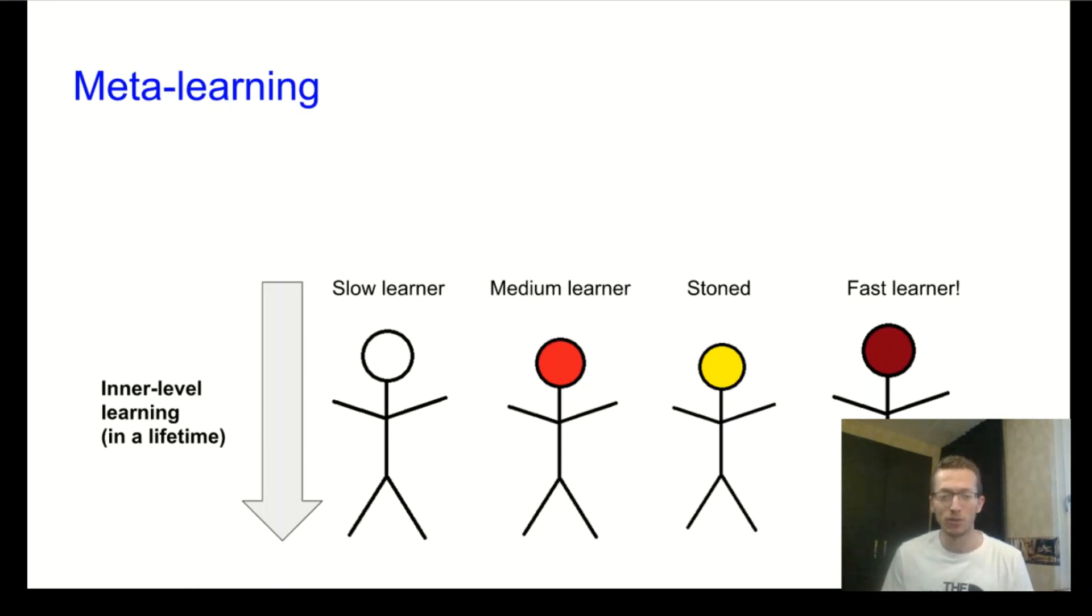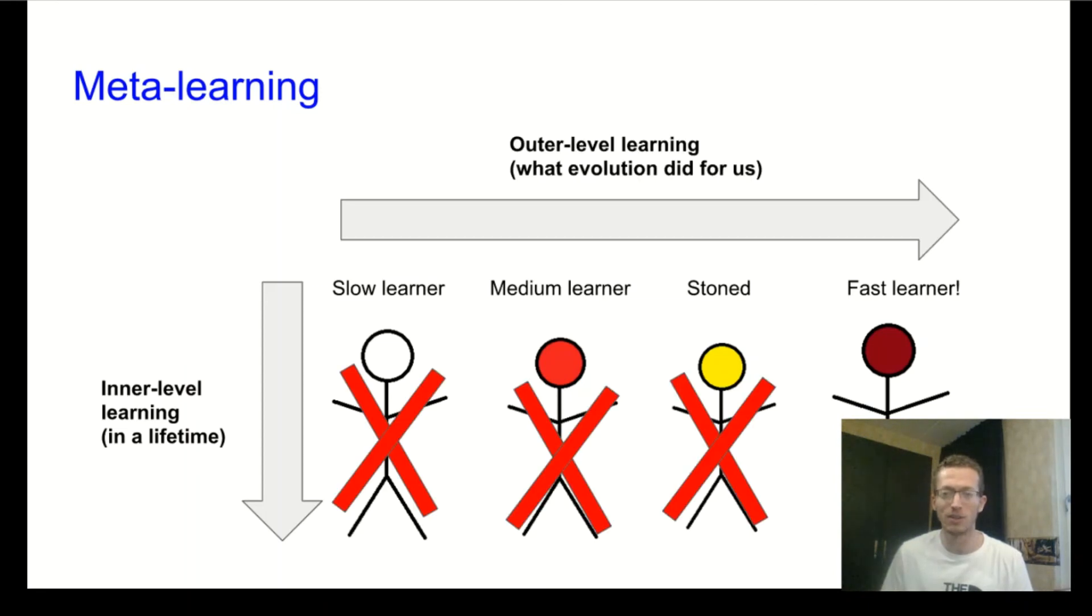Now, the evolution process takes place on a different level, and this is called the outer level. And this is actually the search process for a prior. And this is precisely what meta-learning is.